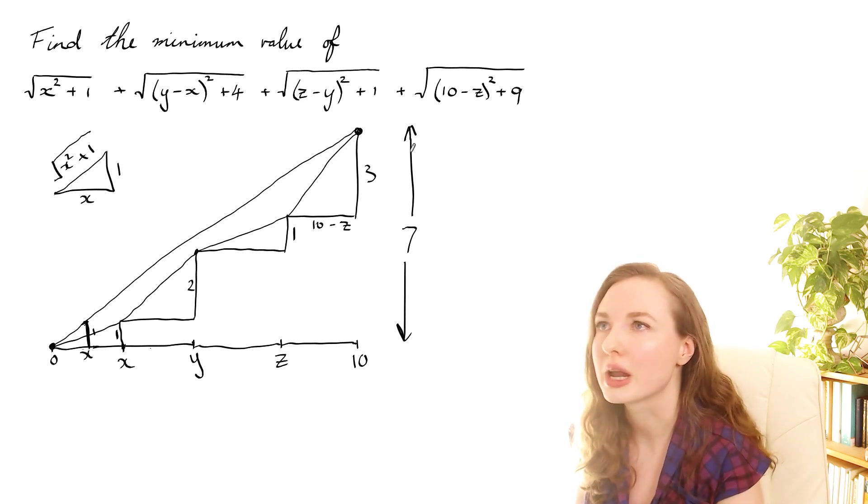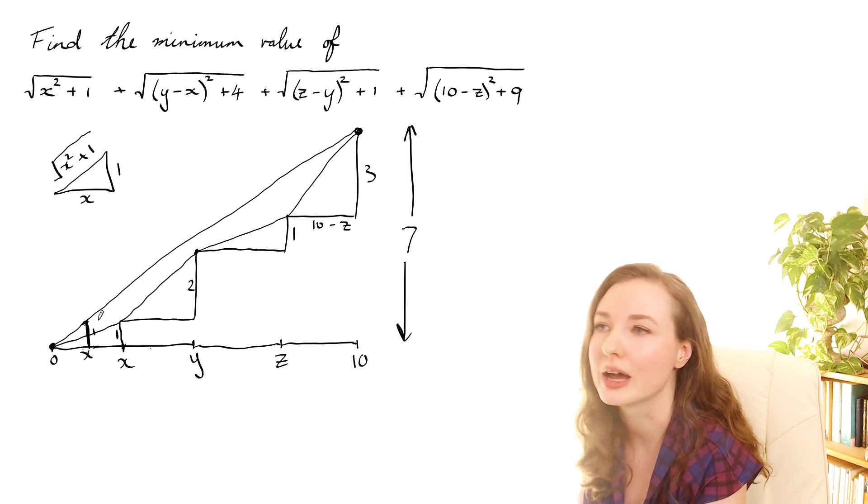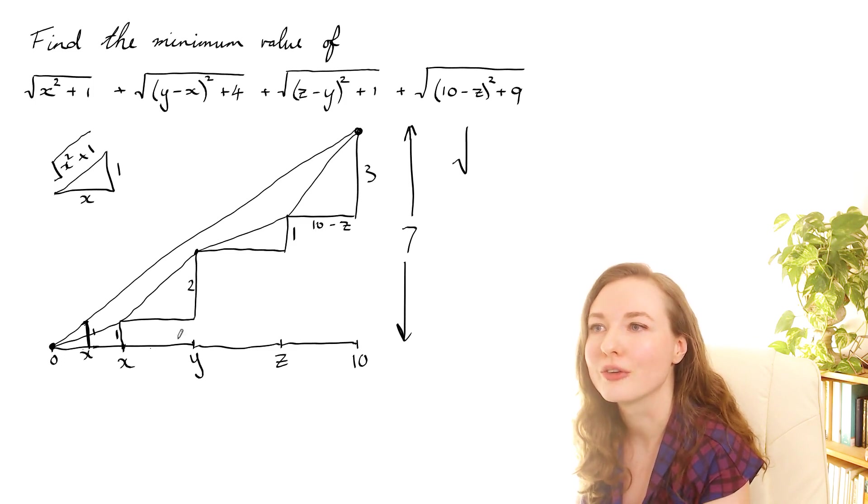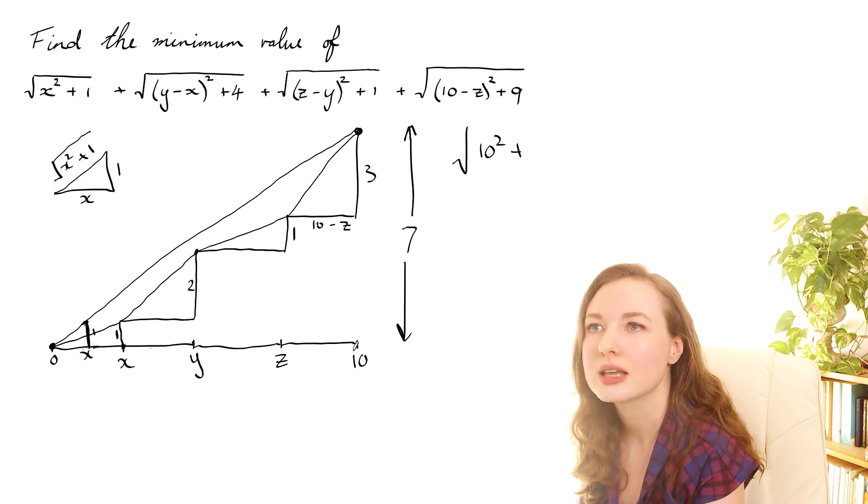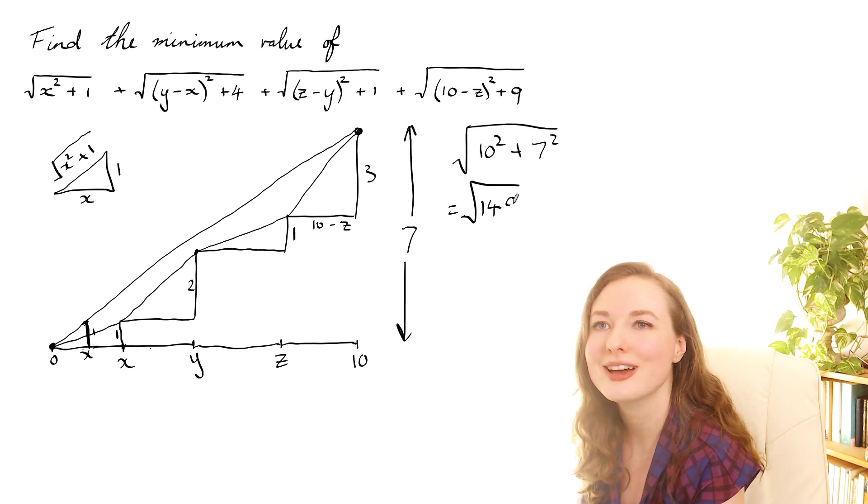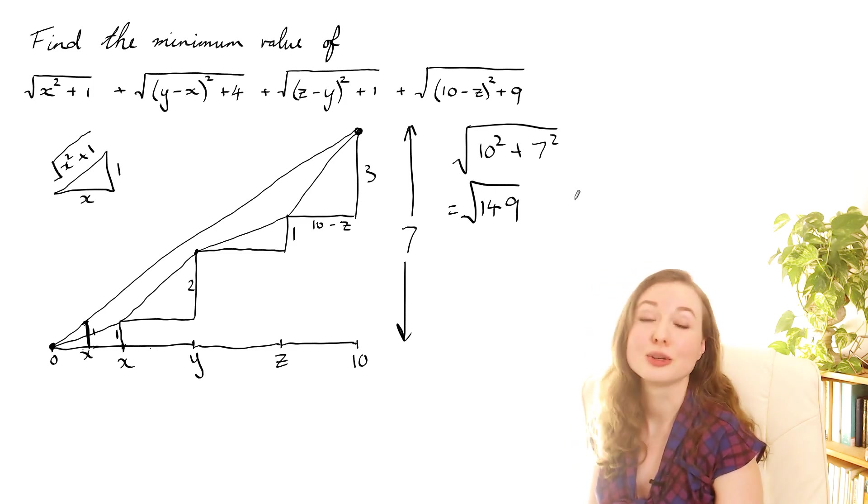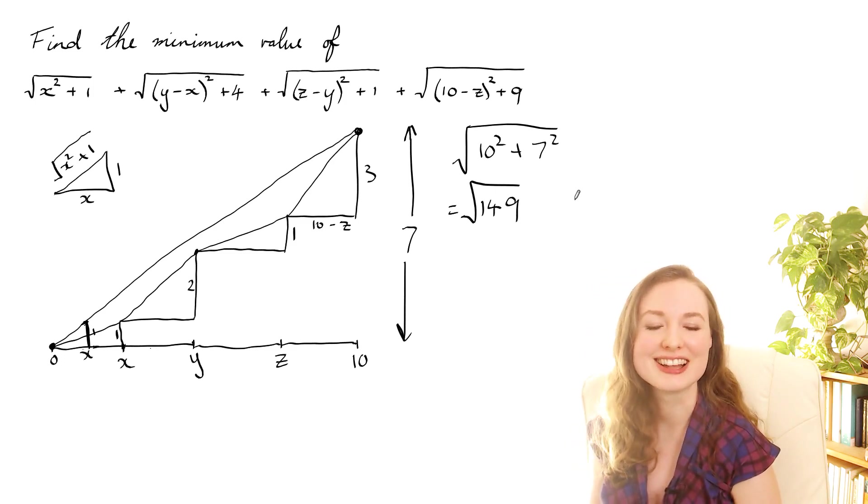But it doesn't really matter because all that we want to work out is that minimum value, so the distance from there to there, which we can just do using Pythagoras. So square root of that side squared, 10 squared, plus that side squared, which is 7. So that makes root 149. And then we can't simplify that at all, so that is the answer to that question.